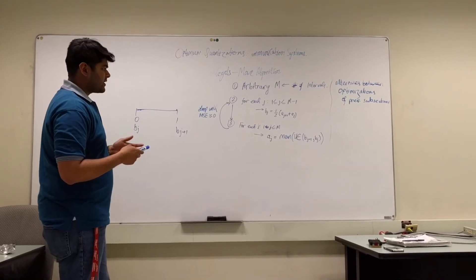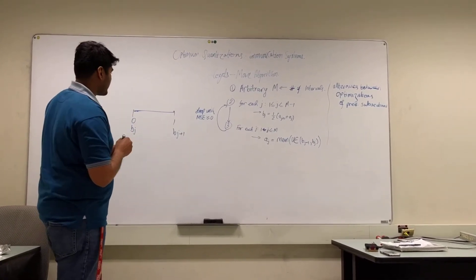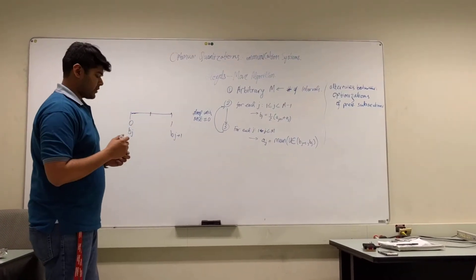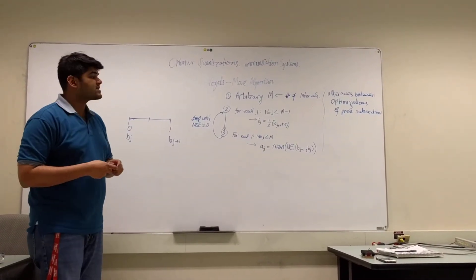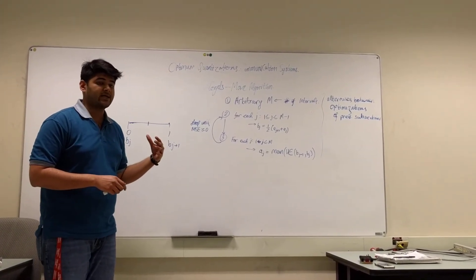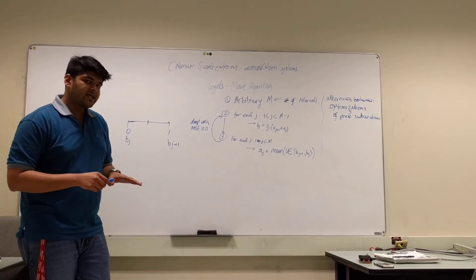What you're essentially doing is that you're taking the midpoint of this particular interval to be your representation point. Now if you recall, this is exactly the same step as was in the uniform quantization technique. But this is where it actually gets different.